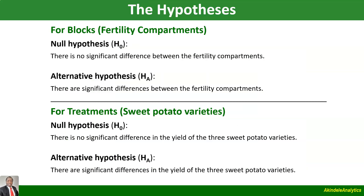For the hypothesis, since there are two sources of variation — variation due to blocks (the fertility compartments) and variation due to treatments (the sweet potato varieties) — we have two sets of hypotheses. For blocks, the null hypothesis states there is no significant difference between the fertility compartments; the alternative is the exact opposite. For treatments, the null hypothesis states there is no significant difference in the yield of the three sweet potato varieties; the alternative is the exact opposite.